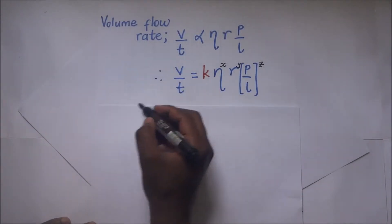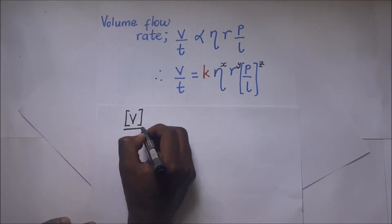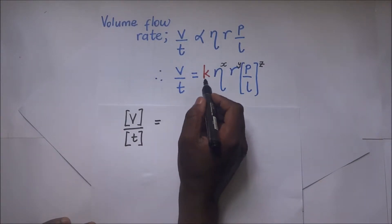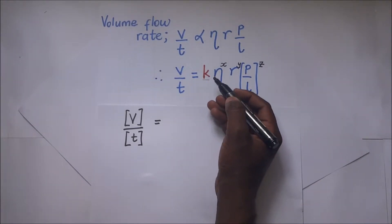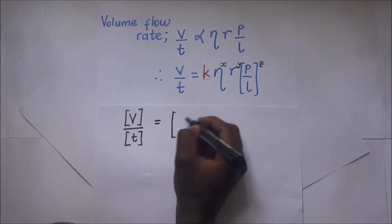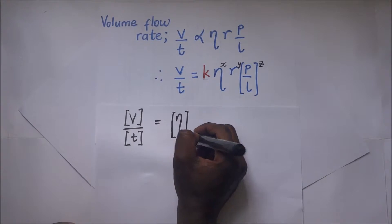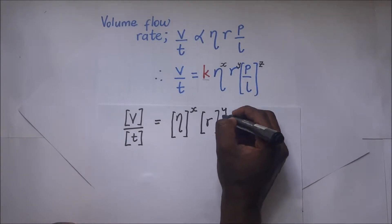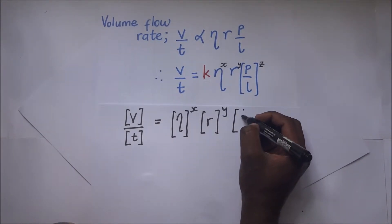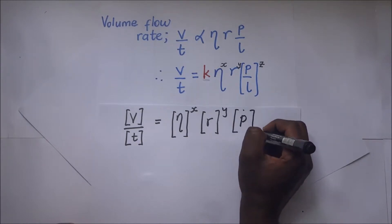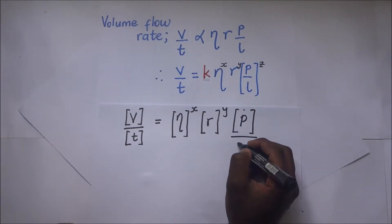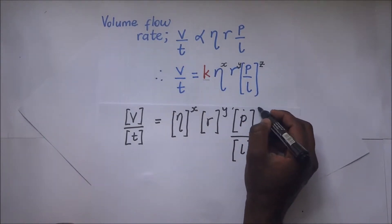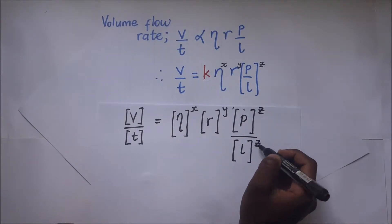Using dimensional analysis, we need the dimensions of V divided by time equal to K — and since K is a constant, it is dimensionless — times the dimensions of the coefficient of viscosity to the power x, times r to the power y, times the dimensions of P divided by L, to the power z.